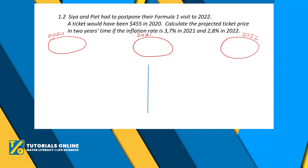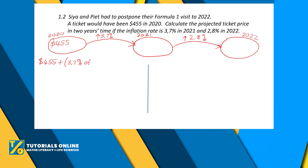In the first bubble, put the ticket price at the beginning: 455 dollars. That helps you see where we're starting and where we're working towards. Between 2020 and 2021, the inflation rate was 3.7%, which is a positive number, so the price increased by 3.7%. Then from 2021 to 2022, it increased by 2.8%.